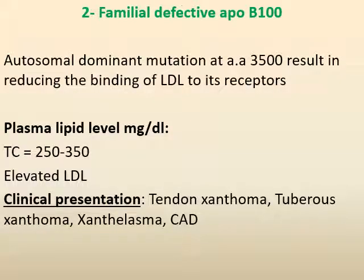The second form is familial defective ApoB-100, an autosomal dominant mutation at amino acid 3000 and 3500, resulting in reduced binding of LDL to its receptor. The patient shows total cholesterol ranging from 250 to 350 mg/dL and elevated LDL. Clinically, the patient may present with tendon xanthoma, tuberous xanthoma, xanthelasma and coronary artery disease.